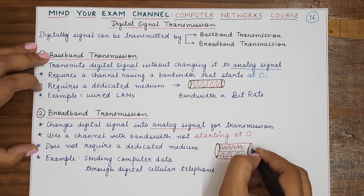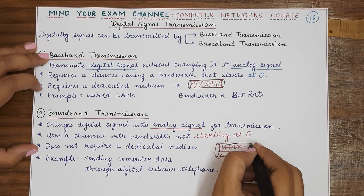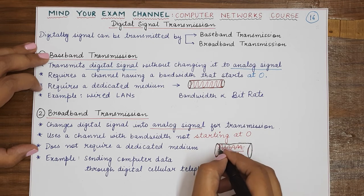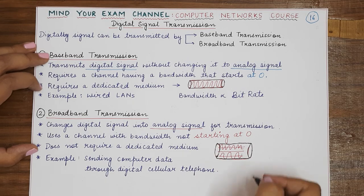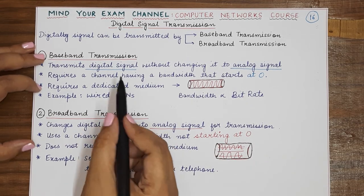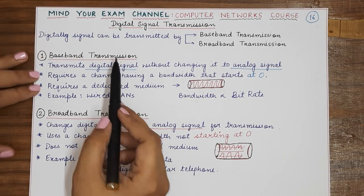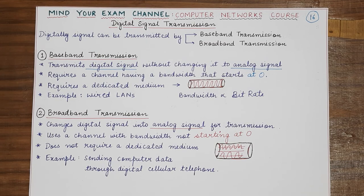So these were the two kinds of digital transmission: broadband transmission and baseband transmission. That's all for today — thank you for watching. Until we meet in the next video, mind your exam.